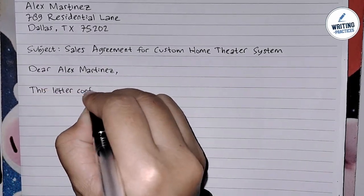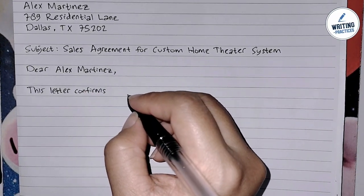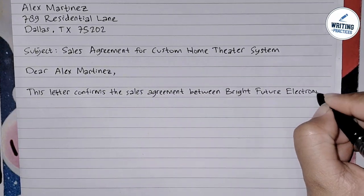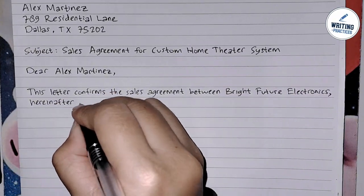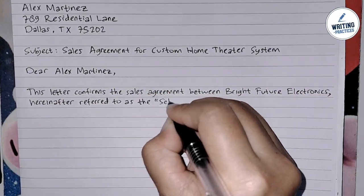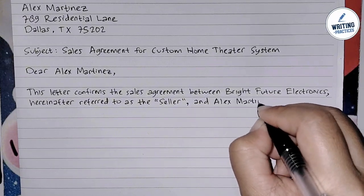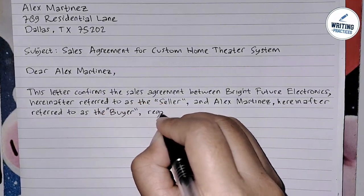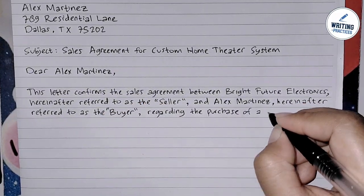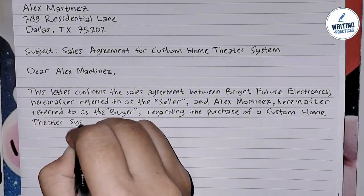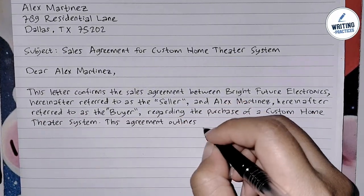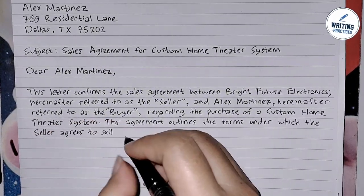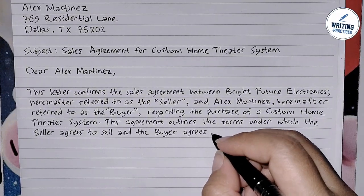In the first paragraph — the opening or introduction — introduce the parties involved, the seller and buyer, and state the purpose of the letter, which is to formalize a sales agreement. For example: 'This letter confirms the sales agreement between Bright Future Electronics, hereinafter referred to as the seller, and Alex Martinez, hereinafter referred to as the buyer, regarding the purchase of a custom home theater system. This agreement outlines the terms under which the seller agrees to sell and the buyer agrees to purchase the specified product.'